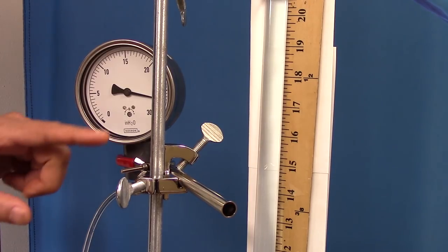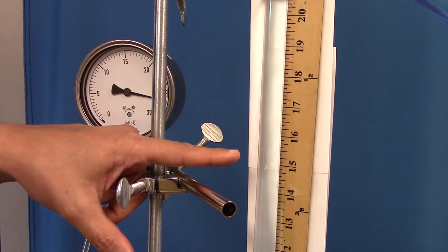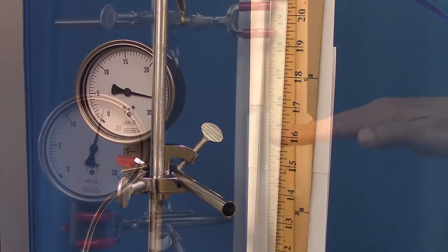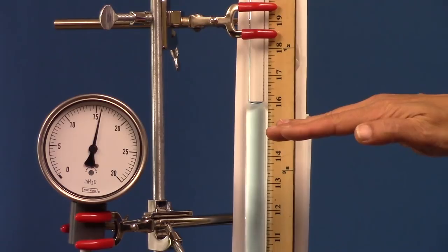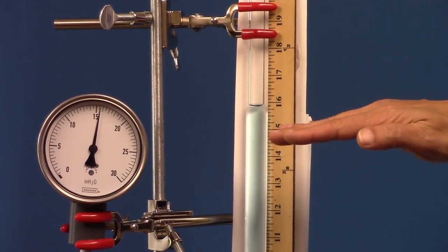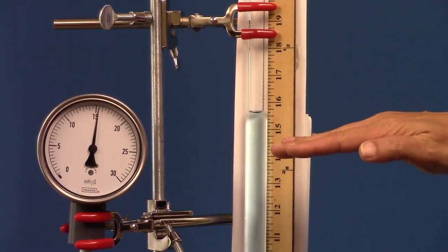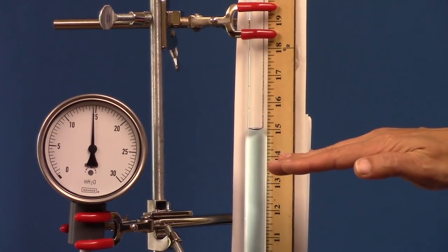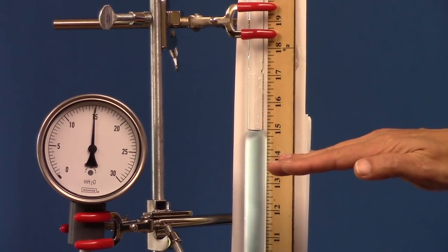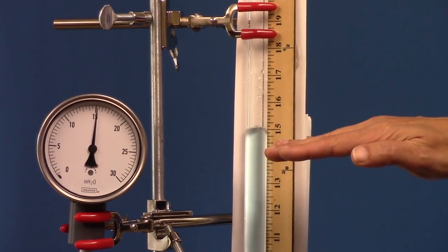The column of water is measured by this yardstick. So to demonstrate the resolution of the Equilibar back pressure regulator, I'm going to control from 16 inches of water column down to 15 inches of water column, and then I'm going to bring it back up to 15 and a half inches of water column.